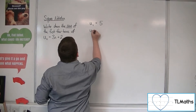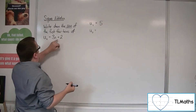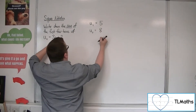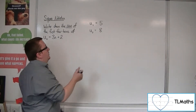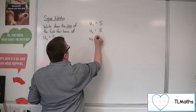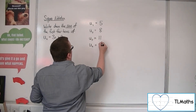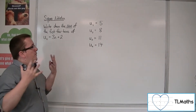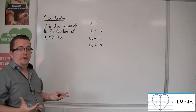u_2 is equal to 3 lots of 2 plus 2, which is 8. And by this point you might notice that we're just adding on 3 each time. So u_3 will be 11 and u_4 will be 14. So here are the first four terms of this sequence.